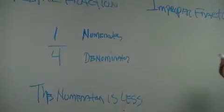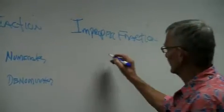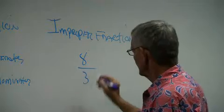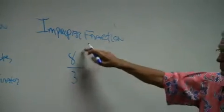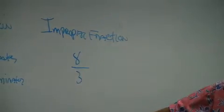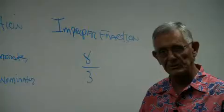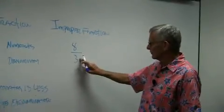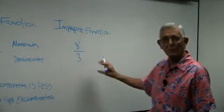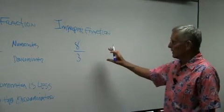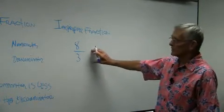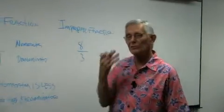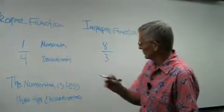An improper fraction is the reverse — the numerator is greater than the denominator. So what we have is a case where we have more than a whole. A mixed number and an improper fraction are two ways of expressing the same value.